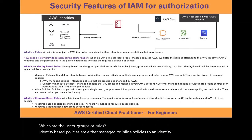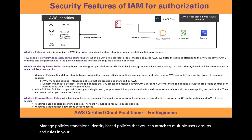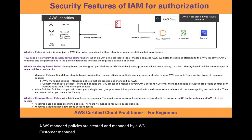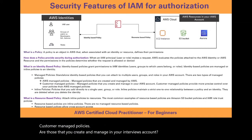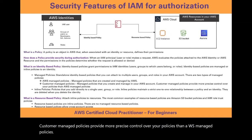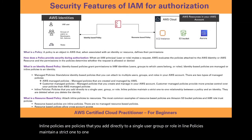Managed policies are standalone identity-based policies that you can attach to multiple users, groups, and roles in your AWS account. There are two types of managed policies. AWS managed policies are created and managed by AWS. Customer managed policies are those that you create and manage in your AWS account, providing more precise control over your policies than AWS managed policies. Inline policies are policies that you add directly to a single user, group, or role. Inline policies maintain a strict one-to-one relationship between a policy and an identity, and they are deleted when you delete the identity.